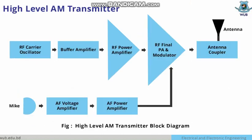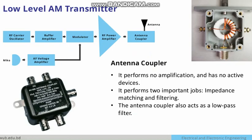Now the discussion comes to high-level amplitude modulation transmitters. There is the RF carrier oscillator, buffer amplifier, RF power amplifier, RF final PA, and modulator. There is also a microphone, an AF voltage amplifier, and an AF power amplifier. In the previous low-level design, no such kind of power amplifier has been used.